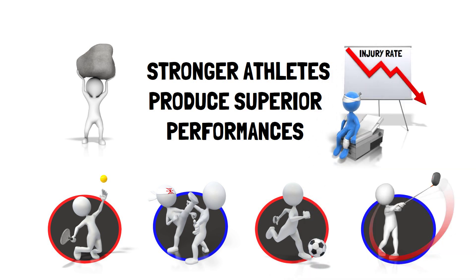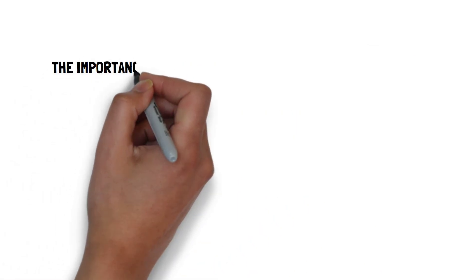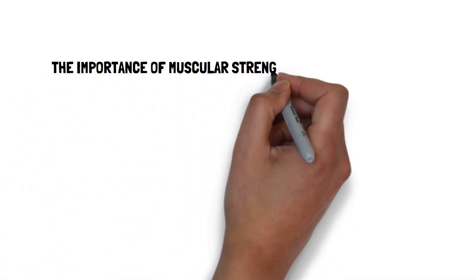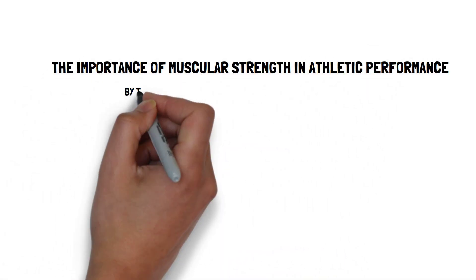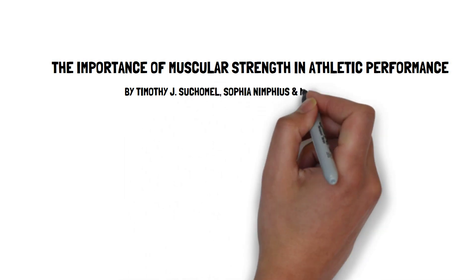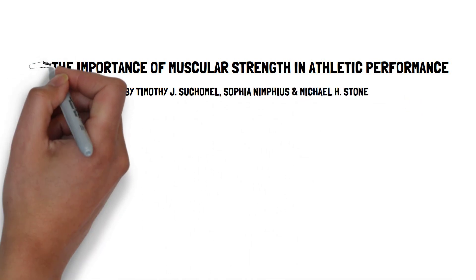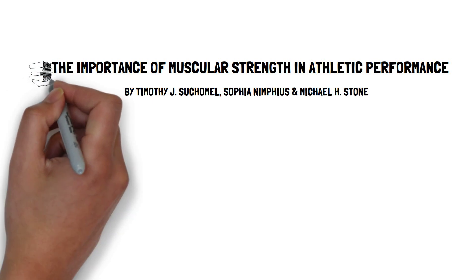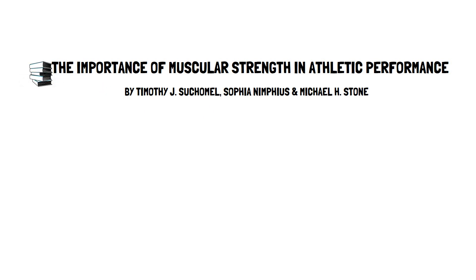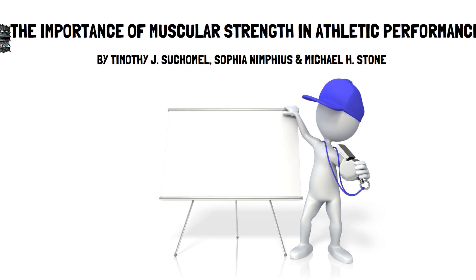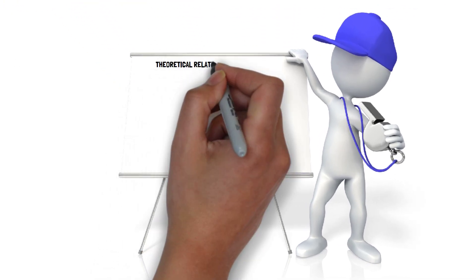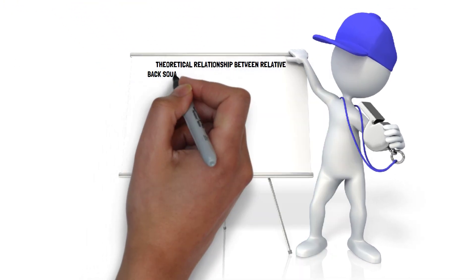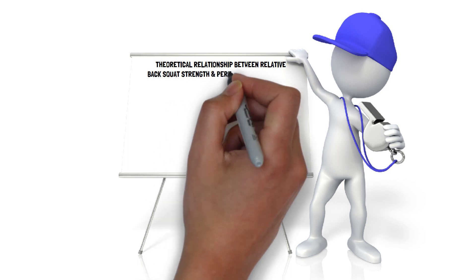The article, published in the journal Sports Medicine, titled 'The Importance of Muscular Strength in Athletic Performance', by Timothy Suchomel and colleagues, reviewed the literature that examined the influence of muscular strength on various factors associated with athletic performance, and in doing so, put forward a model based on the theoretical relationship between relative back squat strength and performance capabilities.